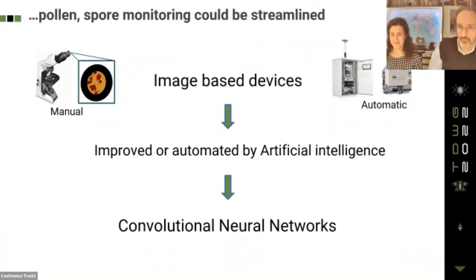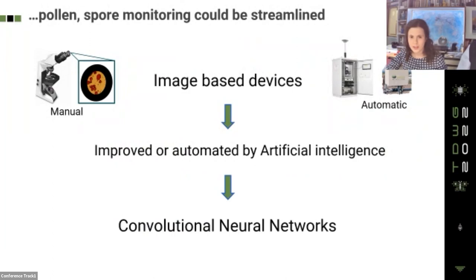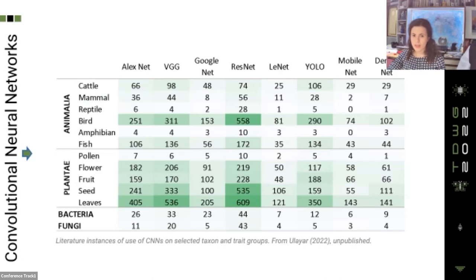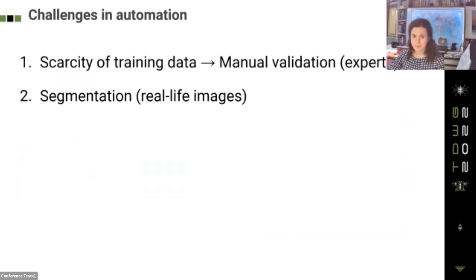This is what we have tried here. The automation of species identification — and that of pollen and spores — presents many challenges. First, the scarcity of training data, which usually requires tedious manual labeling by experts. Second, the task of separating the object from the background, that is segmentation. In pollen, real-world images are often less than ideal compared to training images — for example, debris and air bubbles beset samples collected by traps.